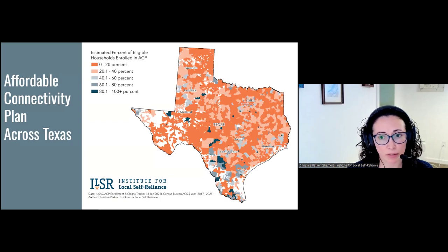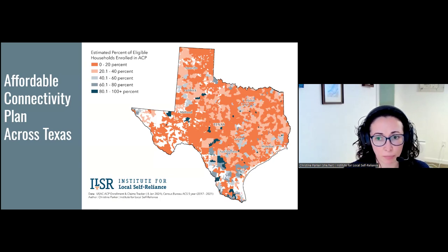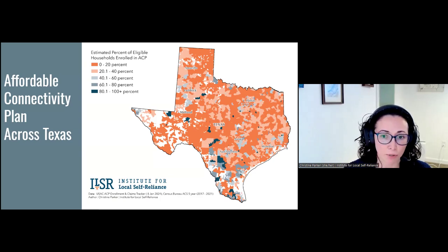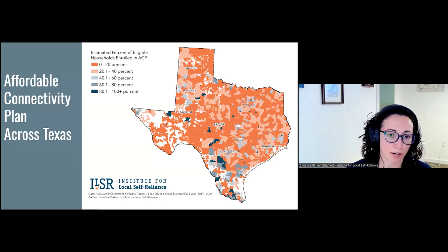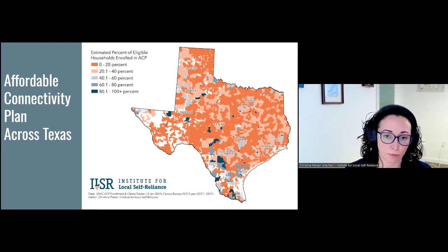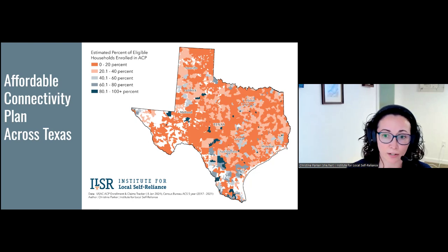The affordability of internet was made super apparent during the pandemic. The FCC stood up the Affordable Connectivity Program very quickly in an effort to get folks back online, back to school and work. Currently, we have over 23 million households enrolled nationally, which is 43% of those households eligible to be enrolled. In Texas, 1.6 million are enrolled, which is 38% of the eligible households — not too far below the national figure.